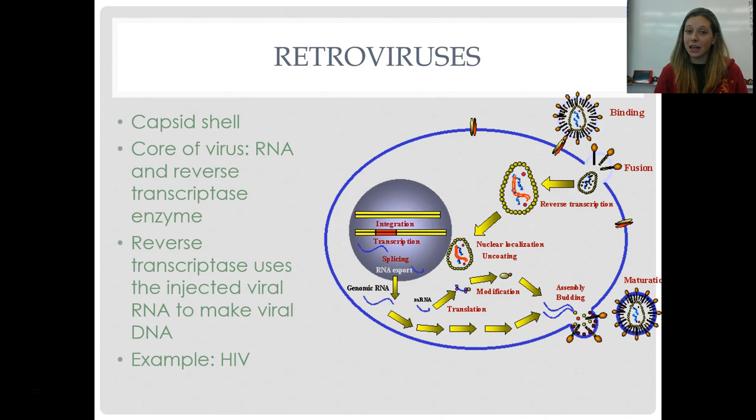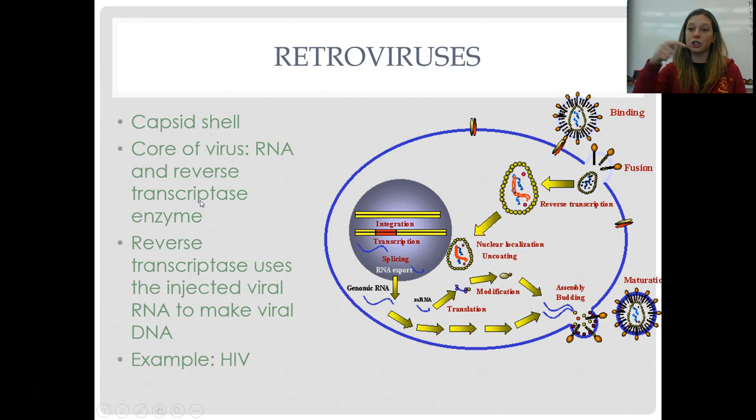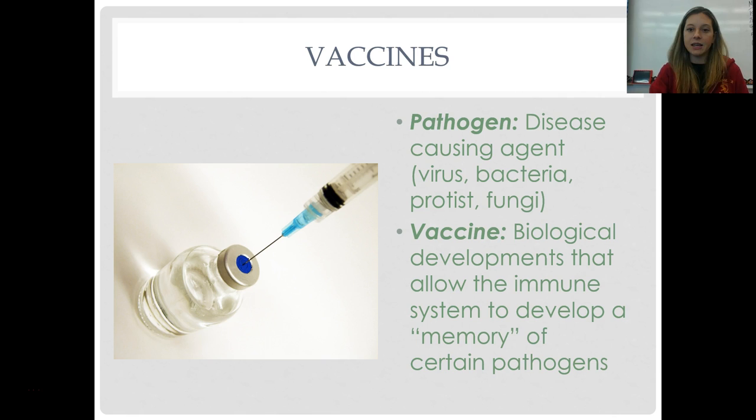A retrovirus has RNA at its core rather than DNA, along with reverse transcriptase enzymes. In reverse transcription, the virus injects RNA into the cell, which is used to make viral DNA that then incorporates into your cell. The most common example of a retrovirus is HIV, the virus that causes AIDS.